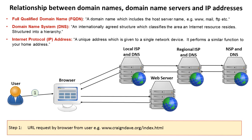It would be hard to post a letter to someone if their house didn't have an address, and the same thing is true here. IP addresses are typically strings of numbers. A traditional version 4 IP address is a set of four numbers — it could look something like 193.63.99.173. There's also something called IP version 6 addresses, which are much more complicated, and we'll get into those in another video. Every website out there has an IP address, but these aren't very handy — that's not as easy to remember as bbc.co.uk. So let's look at how the domain name system works with these IP addresses to make things easier.